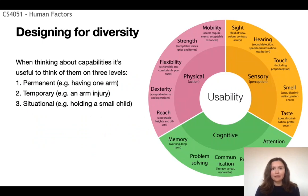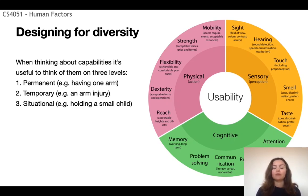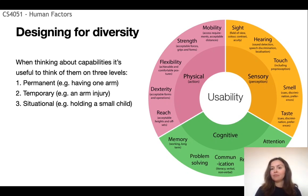As you have learned previously, interaction depends on users' capabilities, and these can be viewed on three different levels: permanent — for instance, having only one arm; temporary — for instance, an arm injury; and situational — for instance, holding a small child, or hearing problems due to a noisy environment, or interacting with a phone while walking. Here you can see a schematic representation of different types of human factors and abilities.